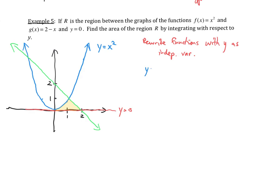If y equals x squared, then taking the square root of both sides gives x equals plus or minus the square root of y. We have two sides of the curve — the positive square root and the negative square root. Since the region only incorporates the positive part, we keep x equals the positive square root of y. For the second curve, y equals 2 minus x gives us x equals 2 minus y when we solve for x in terms of y.